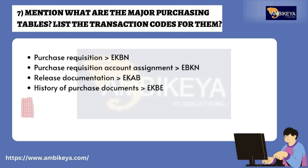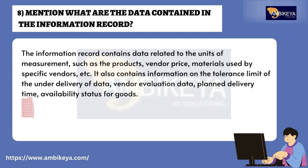Question number seven: mention what are the major purchasing tables and list the transaction codes for them. Purchase Requisition: EKBN; Purchase Requisition Account Assignment: EBKN; Release Documentation: EKAB; History of Purchase Documents: EKBE.